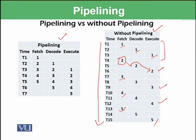Using pipelining, at time T1 we fetch instruction 1. At time T2, we do two things: decode instruction 1, and fetch instruction 2. At time T3, we execute instruction 1, decode instruction 2, and fetch instruction 3. So multiple stages are overlapping simultaneously.